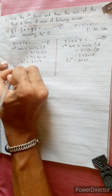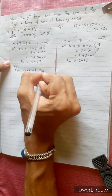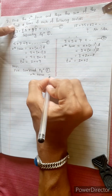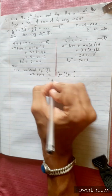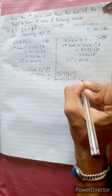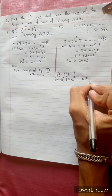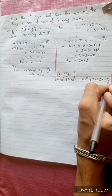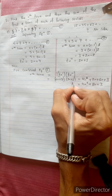Now, for the combined equation, the nth term equals tn prime multiplied by tn double prime, which equals 2n plus 3 times 2n plus 1. Expanding: 4n squared plus 2n plus 6n plus 3, which equals 4n squared plus 8n plus 3.